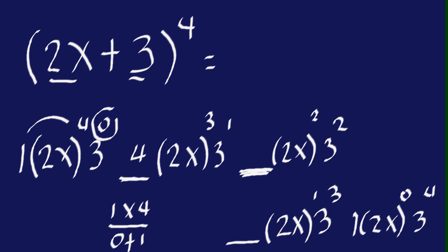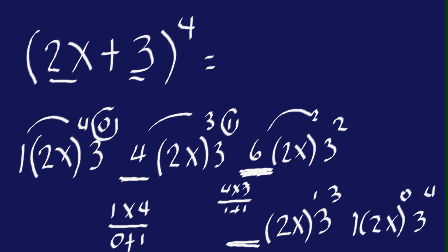For the next coefficient, we multiply this 4 and 3, then divide by exponent 1 plus 1. So that's 12 over 2, which is 6. We already have the last one, but we'll double check: multiply 4 and 1, then divide by 3 plus 1. That's 4 over 4, which is 1.